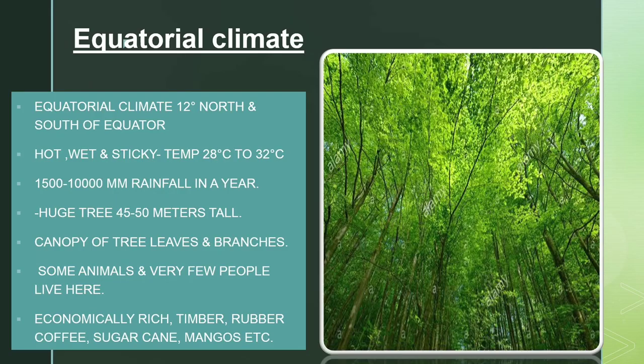This is the climate of the equatorial region. The equatorial region experiences the highest temperatures — the temperature is very high. This results in large-scale evaporation, and this continuous evaporation is the reason why it rains almost every single day in this region.